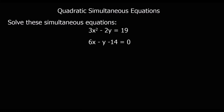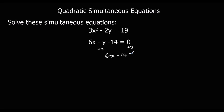Here we've got 3x squared plus 2y equals 19, and 6x minus y equals 14. We need to make the linear equation either x equals or y equals so we can substitute it in. It's easiest to make it y equals — if I add y to both sides, it gives y equals 6x minus 14.